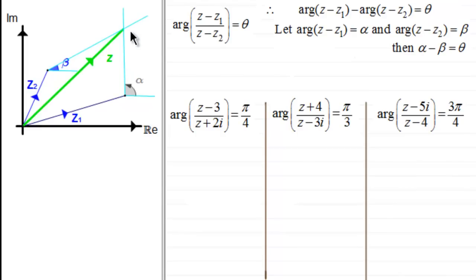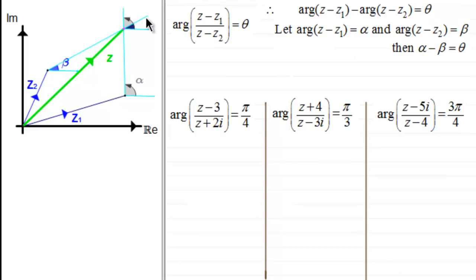If I draw a horizontal line in here, then because these two lines are parallel, the angle alpha here corresponds to the angle alpha at the intersection. Similarly, the angle beta shown in blue corresponds to the blue angle beta at the other end. The angle between these two lines at the intersection is going to be alpha minus beta, which is exactly the same as the angle between them at the other side.